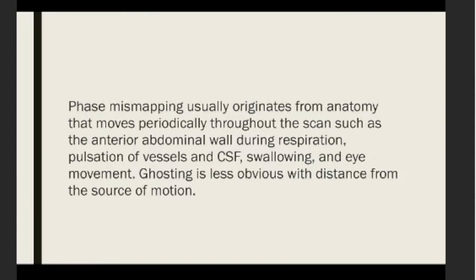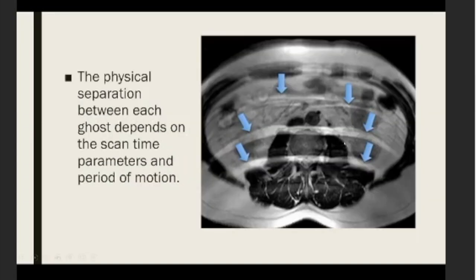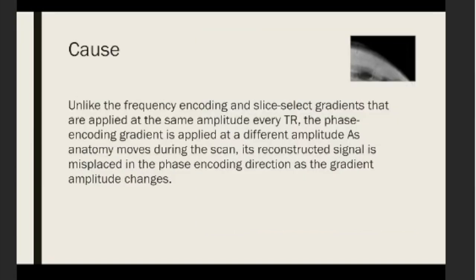Phase mismapping usually comes from anatomy that moves periodically throughout the scan, such as the anterior abdominal wall during respiration, pulsation from vessels and CSF flow, and eye movement — all of these produce ghosting artifacts. Ghosting is less obvious with distance from the source of motion. The physical separation between each ghost depends on scan time parameters and the period of motion.